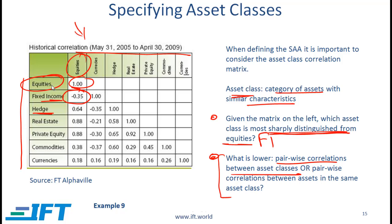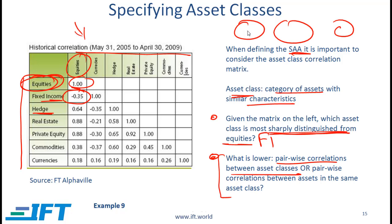Different stocks fall within the equities asset class, and generally the correlation between stocks is relatively high compared to the correlation across asset classes. That is why it makes a lot of sense to define your strategic asset allocation in terms of the relative weightings of different asset classes such as stocks, bonds, and commodities.